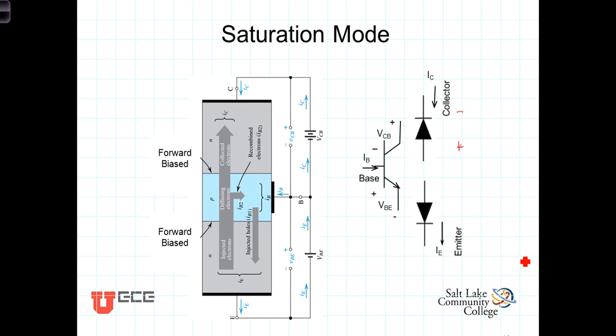The BJT is in saturation mode or is said to be saturated when the collector to base PN junction is forward biased. We need to pay close attention to the polarity. When the junction is forward biased, the collector voltage is less than the voltage at the base. In order for this to be forward biased, VCB, the voltage from the collector to the base, is negative.